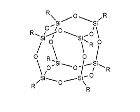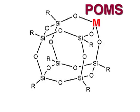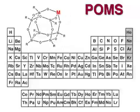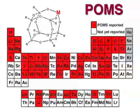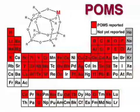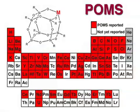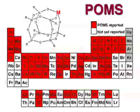By replacing one of the silicon atoms, other inorganics may be incorporated into the POSS cage to create POMS, or polyhedral oligomeric metallosylsesquioxanes. Many different elements have been incorporated into the POMS cage and have uses ranging from catalysis to optical materials and radiation shielding.